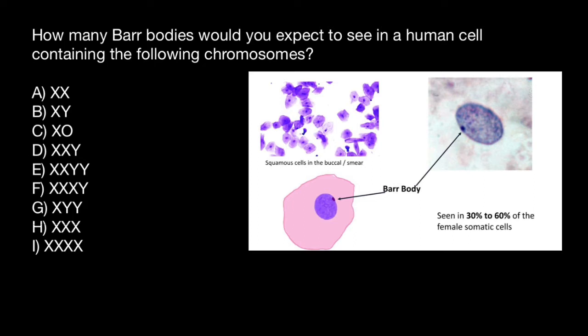But do not expect to see them in every female cell — we can see it in about 30–60% of cases. We can see them only in somatic cells, because in somatic cells we have a diploid number of chromosomes. So a female has two X chromosomes and one would form a Barr body. A Barr body is also called X or sex chromatin — it is essentially a deactivated or inactive X chromosome. This darkly stained structure is named after Dr. Murray Barr, who was a Canadian geneticist.